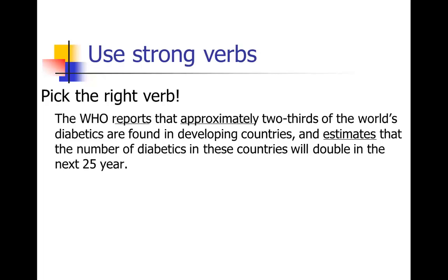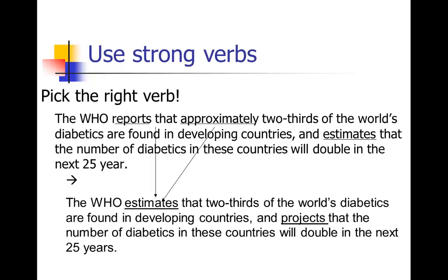What's another way to say 'reports approximately'? There's a verb that already has 'approximately' embedded in it. Remember, we're going to try to avoid adverbs — one way to do that is to pick the right verb that already has the adverb embedded. So 'reporting approximately' really means estimates. That verb from the second part of the sentence is perfect for the first part. And since we've now used 'estimates' there, we need a better verb for the second part. If you're estimating something in the future, a slightly better verb is 'projects' — it gets the idea of the future in there. These are just slightly better verbs that make a big difference.